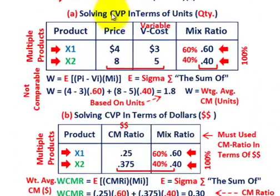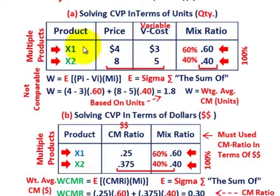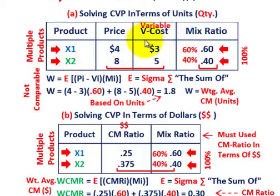Solving our CVP problems in terms of units or quantity: we're going to be looking at two different products, X1 and X2. Each has a different price and unit variable cost. We're going to have a mix ratio for each product — how much of each product we sell. The mix ratio is 60% for product X1 and 40% for product X2. To solve in terms of units, we have to come up with that weighted contribution margin.